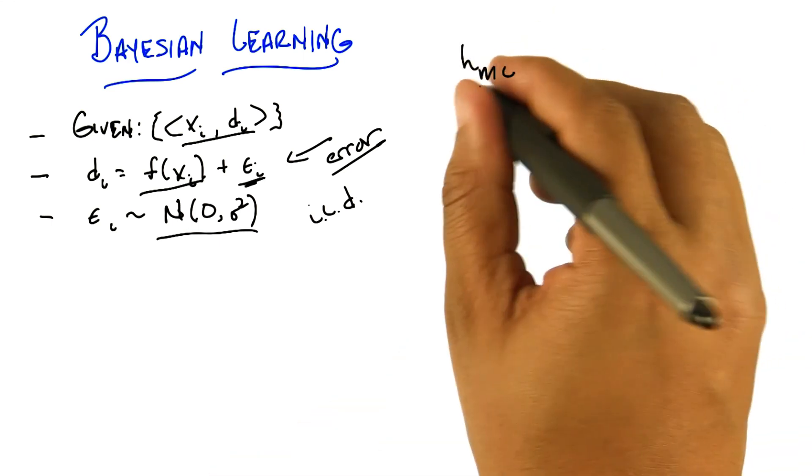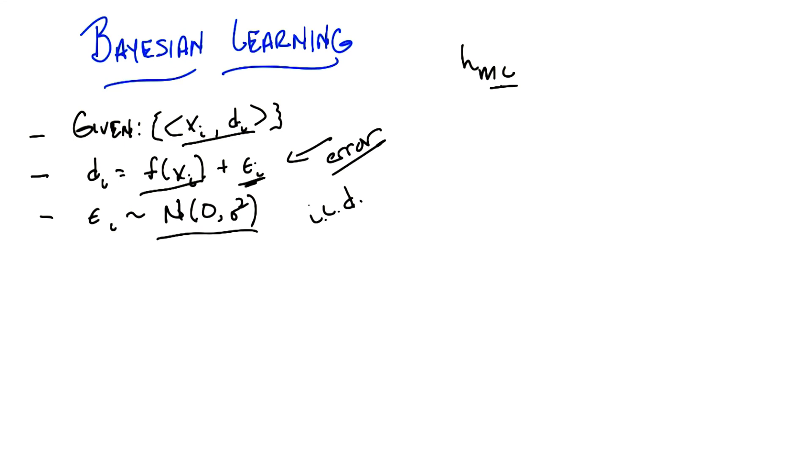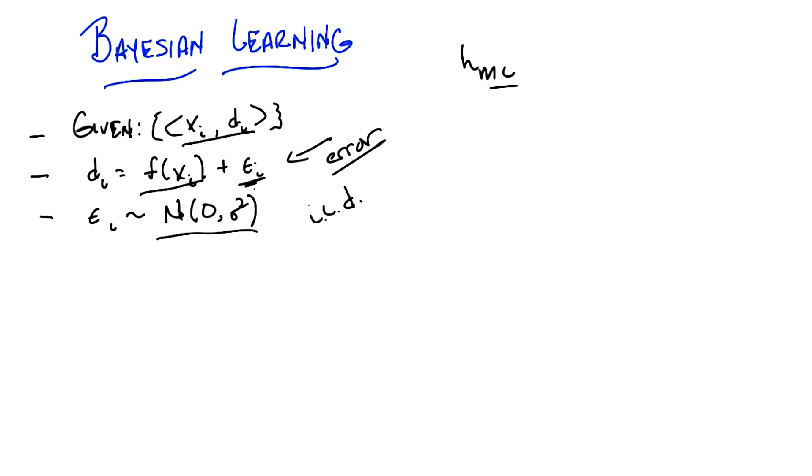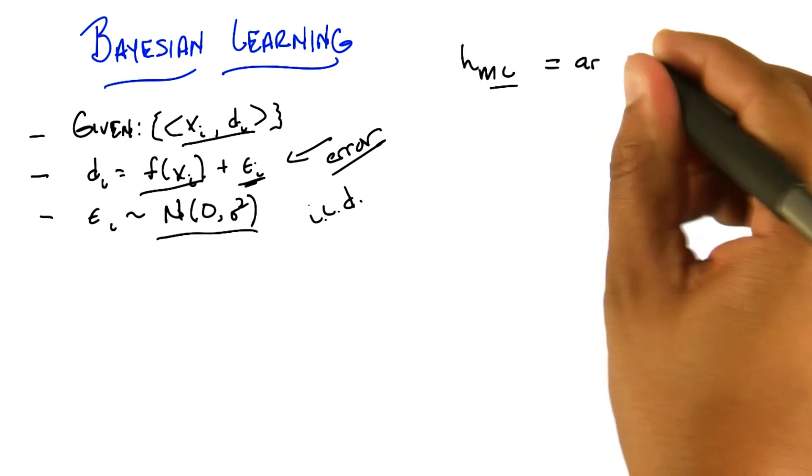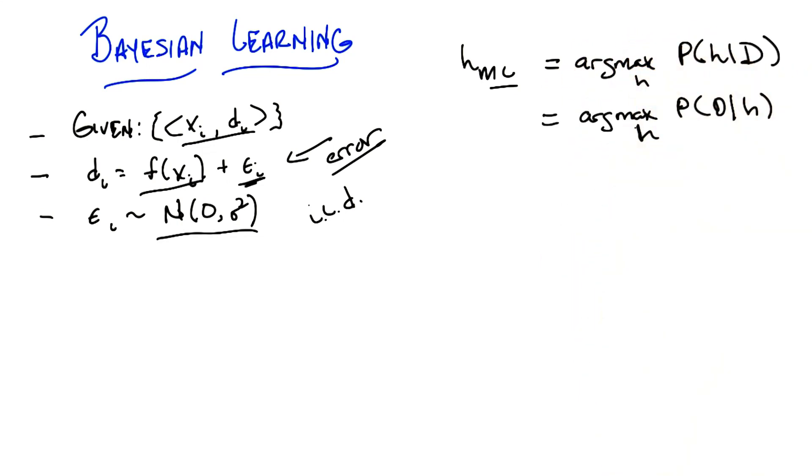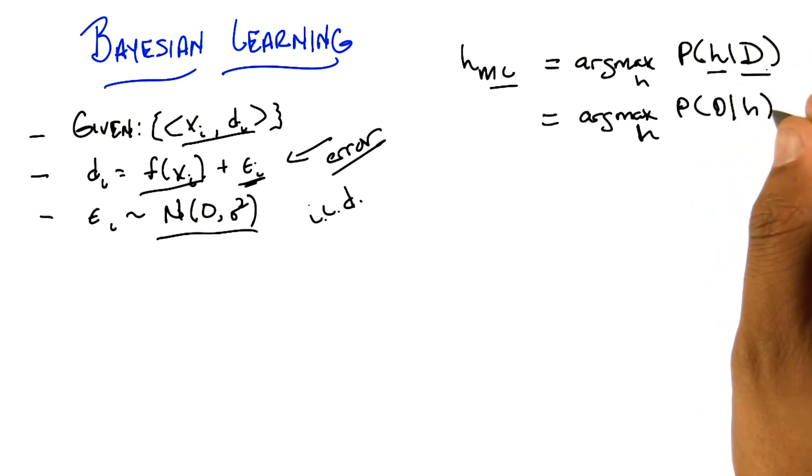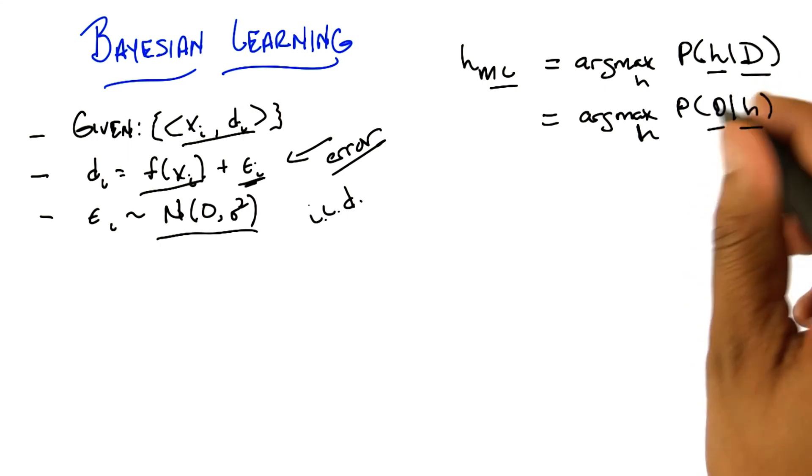Here's my question to you: What is the maximum likelihood hypothesis? Do we know f? Can I just say f? No, we don't know f. All we see are x of i's and d of i's. But we know there is some underlying f, and we know that it's noisy according to some normal distribution. We know how to find the maximum likelihood hypothesis, or at least we know an equation for it. The maximum likelihood hypothesis is simply the one that maximizes this expression.